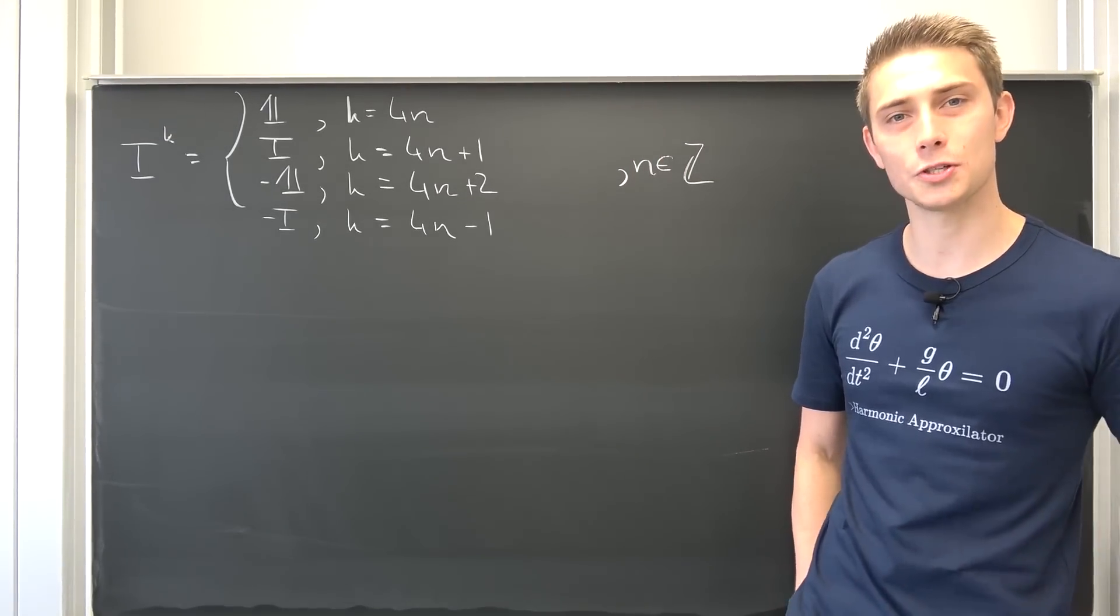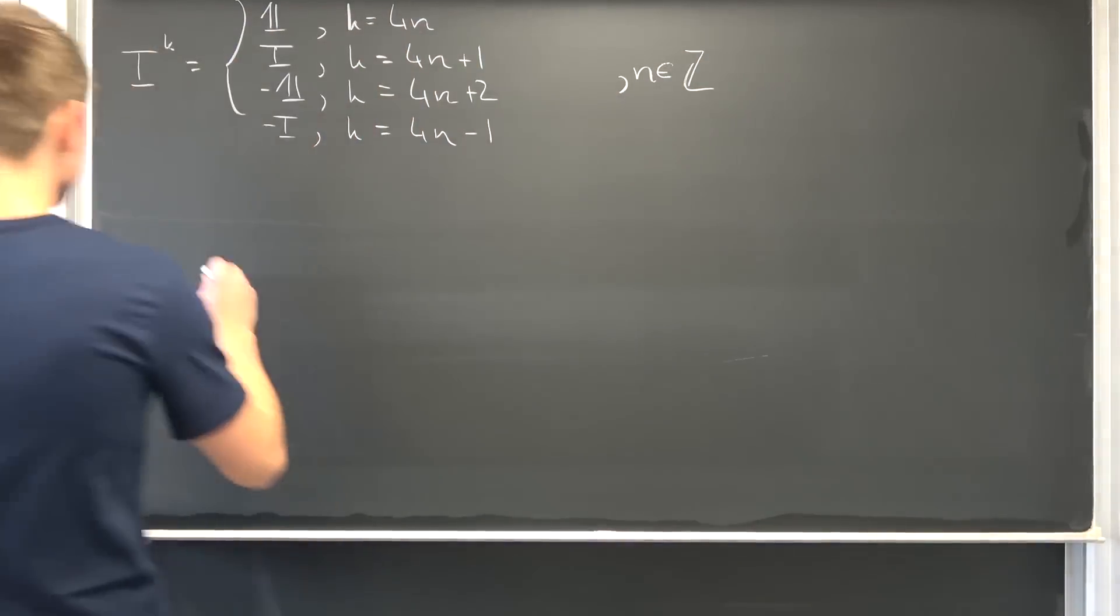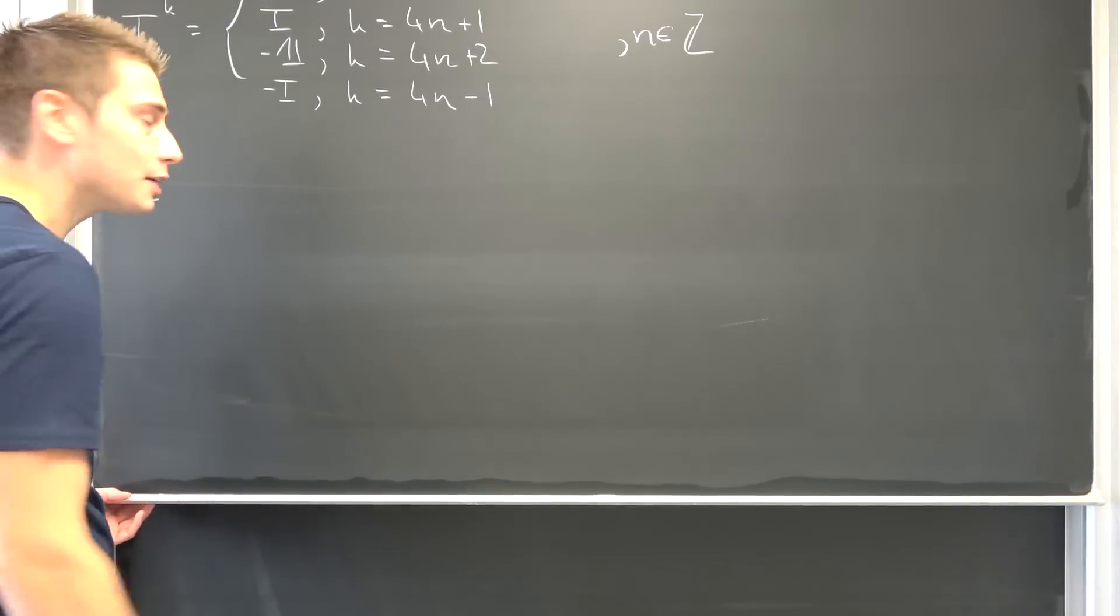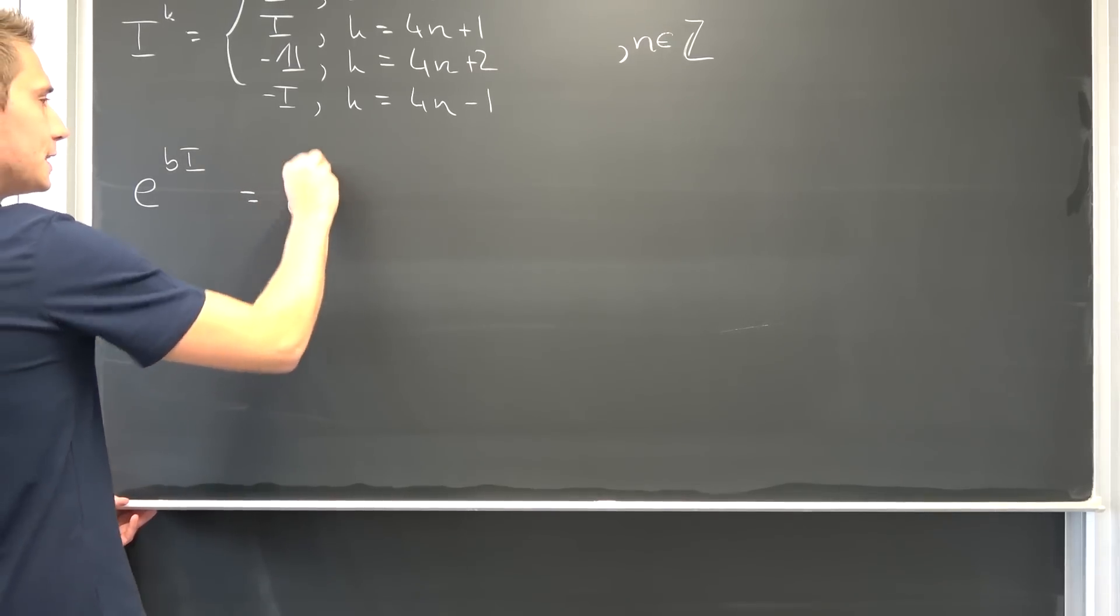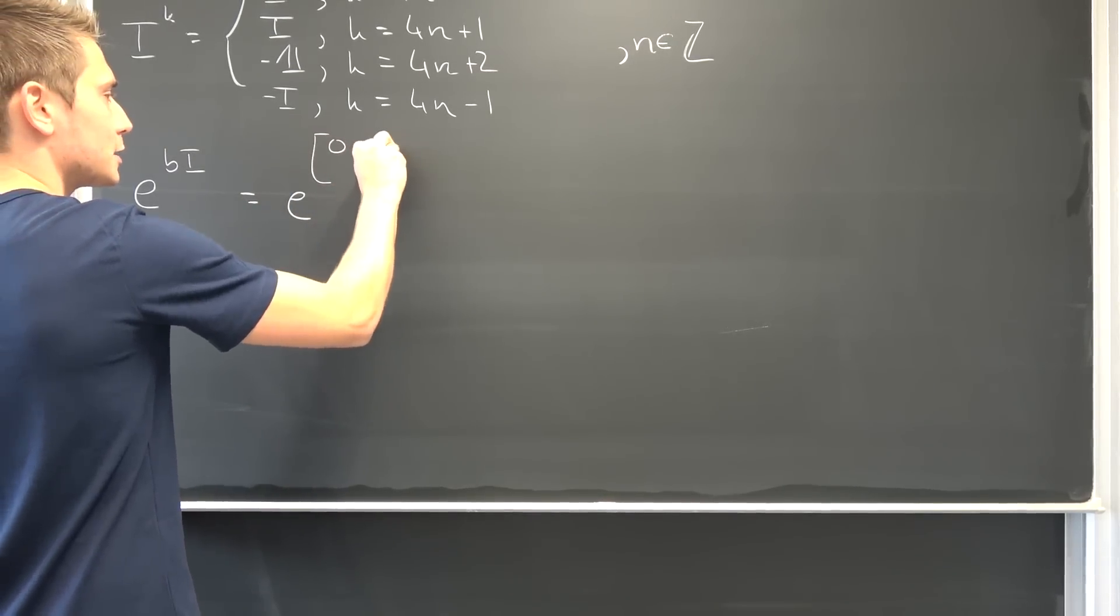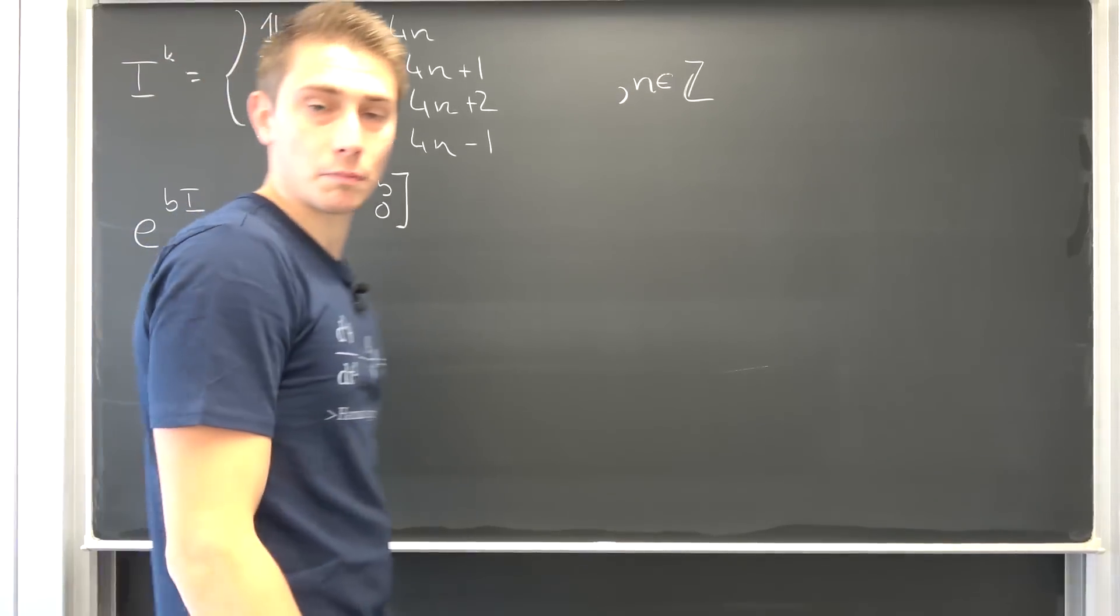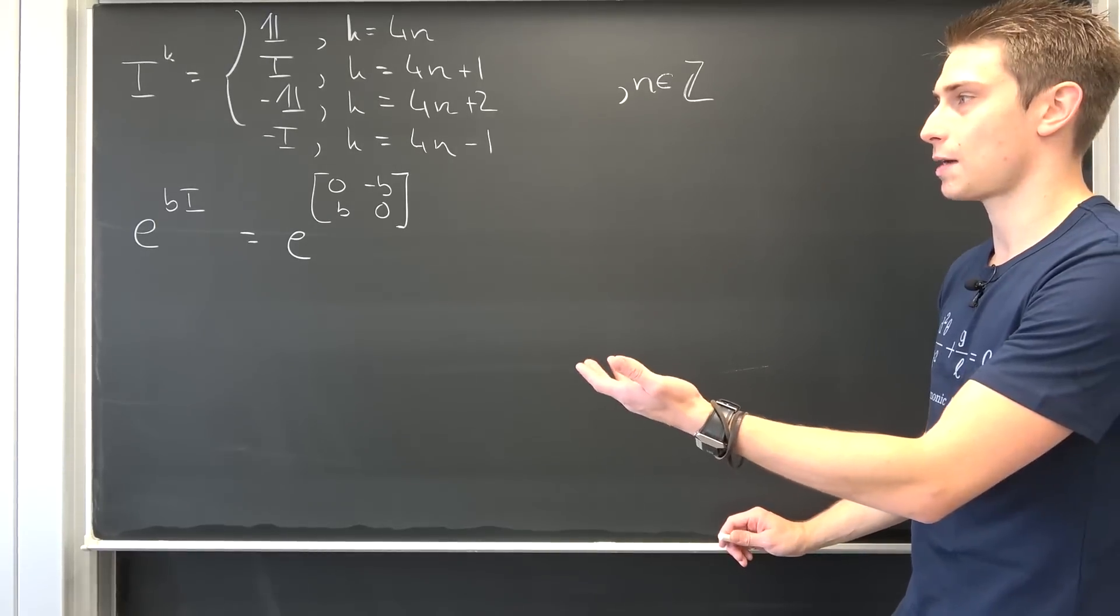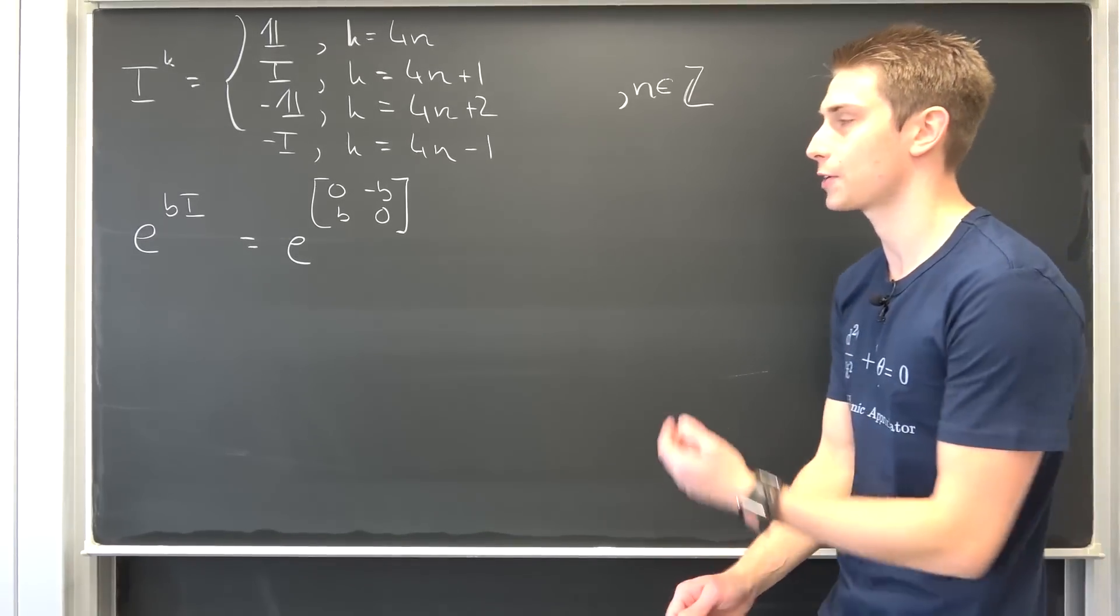This is so weird, but we are going to do it today. And for this I would like to simply take a look at e to the b times I. How would you go on with something like this? This really doesn't make any sense at first glance.